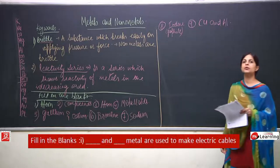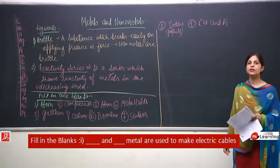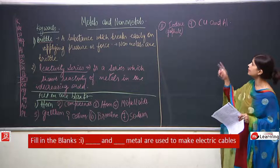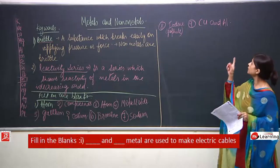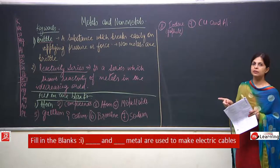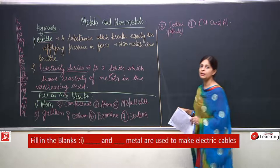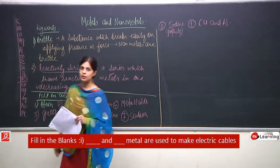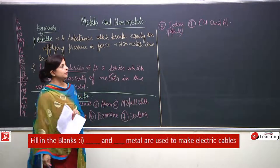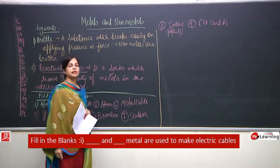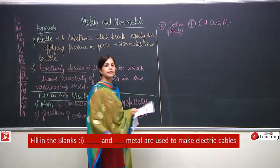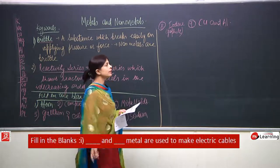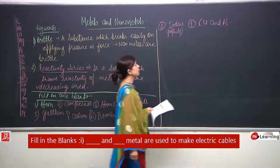Ninth: dash and dash metals are used to make electric cables. We have to write the names of two metals which are used to make electric cables — they are very ductile. The two names are copper and aluminium. Silver is actually more ductile and a better conductor, but it is very costly and may get stolen, so we don't use it.